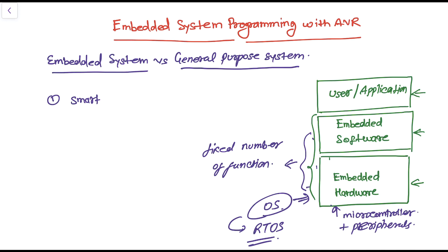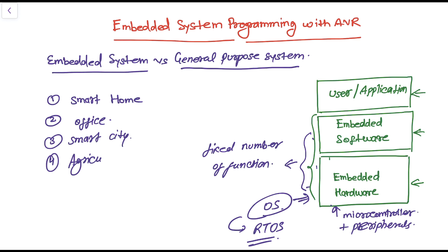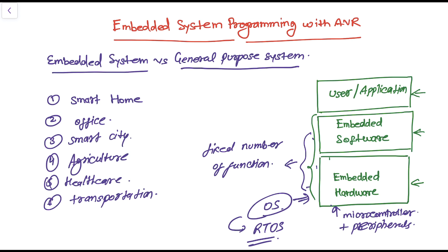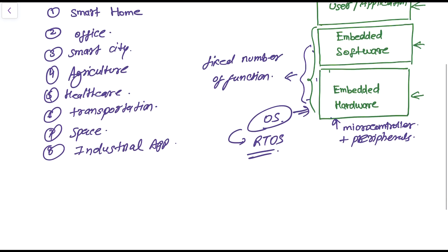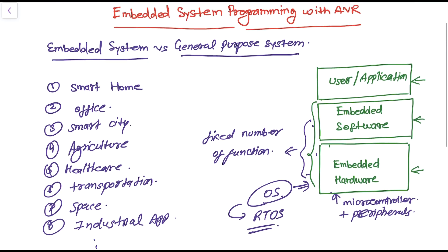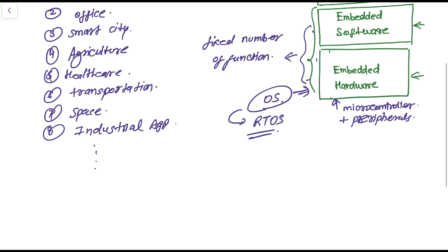There are many applications of embedded system devices. The most famous is the smart home application. It can also be used in offices, smart cities, agriculture, healthcare such as pacemakers and health monitoring devices, transportation, space applications, and industrial applications.